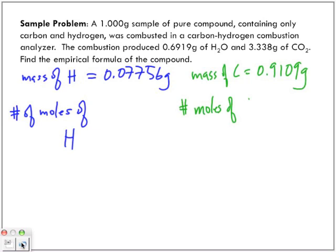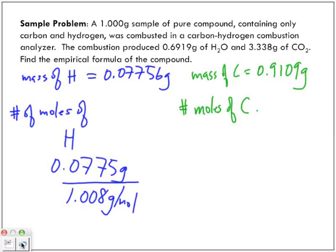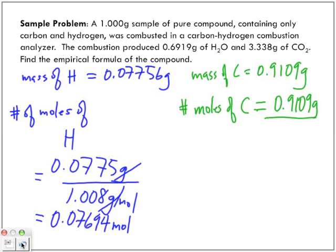To find the empirical formula, we need the number of moles of each element. For hydrogen: 0.07756 grams divided by the molar mass of hydrogen, 1.008 g/mol, gives 0.07694 moles of hydrogen. For carbon: 0.9109 grams divided by the molar mass of carbon, 12.01 g/mol, gives 0.07584 moles of carbon.